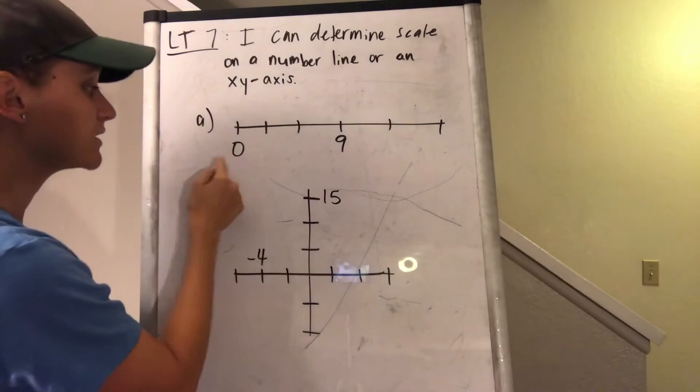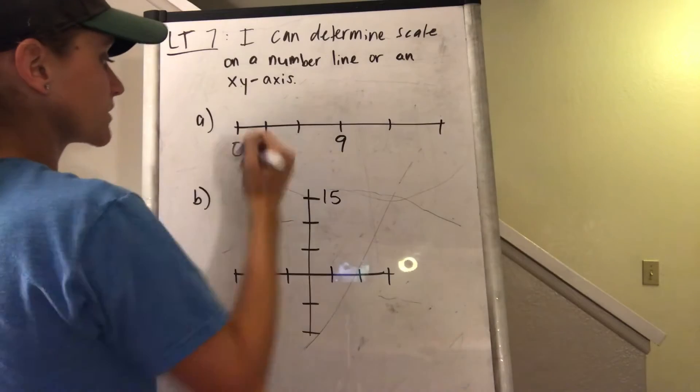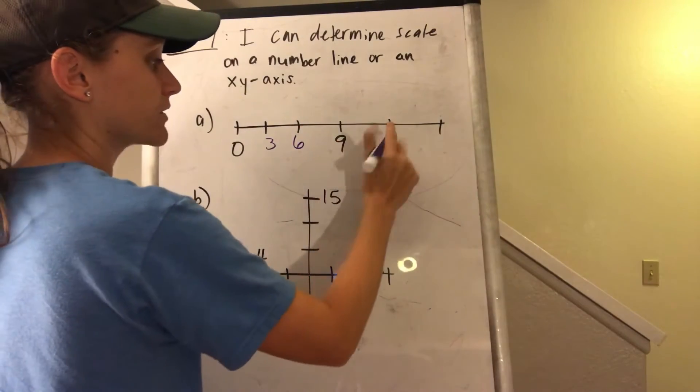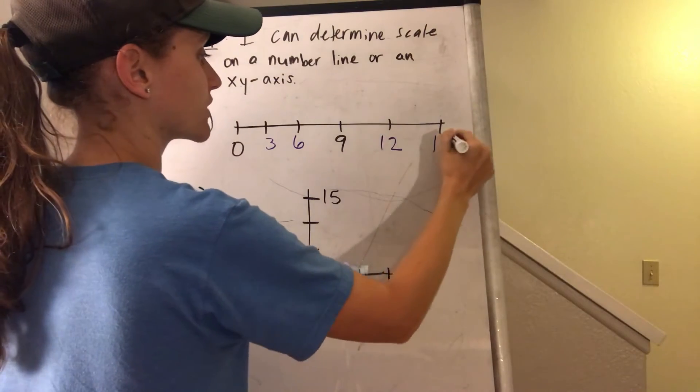So I could try 3. 0, 3, 6, 9. Alright, that works. So this is 3, 6, 9. I add 3 more, that's 12. I add 3 more, that's 15.